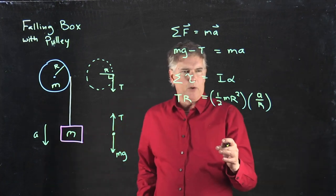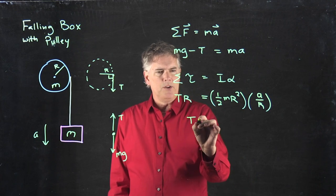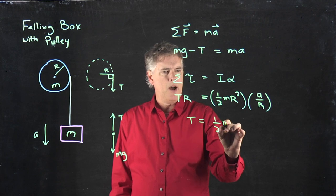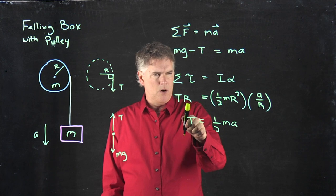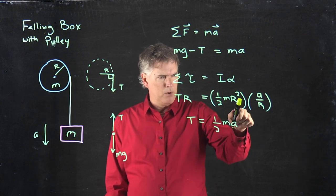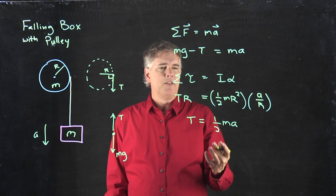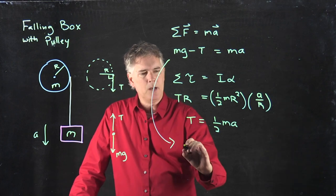So we can simplify this a little bit. If we divide out all the R's, we just get T equals one-half m times A. Look at that. R goes away with one of those. The other one goes away right there. The R's drop out entirely.